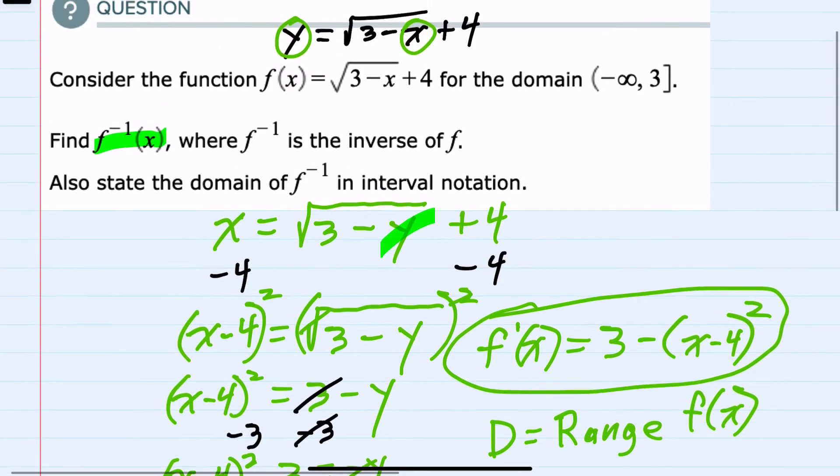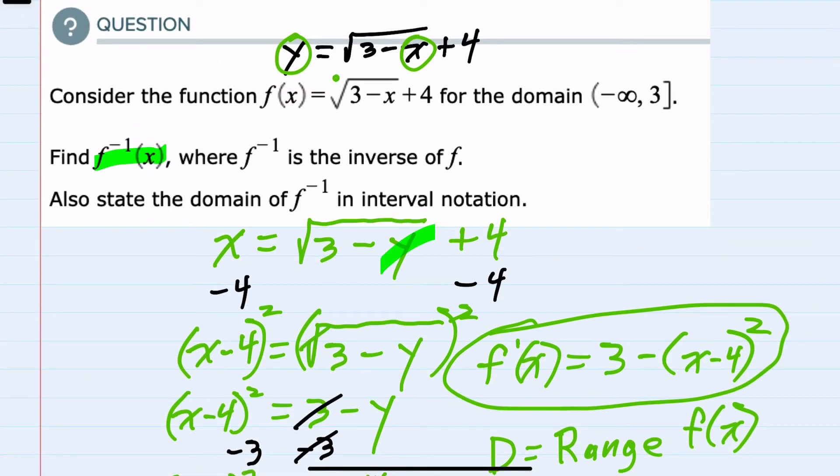So here, if we look back at our original function f of x, we know that the square root will always be positive. It could be 0 or anything bigger than 0. And if we add 4 to 0 and anything bigger than 0, then our range for the original function could be as small as 4, including 4, because the square root here could be 0.